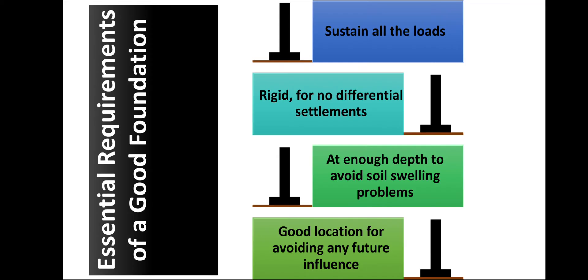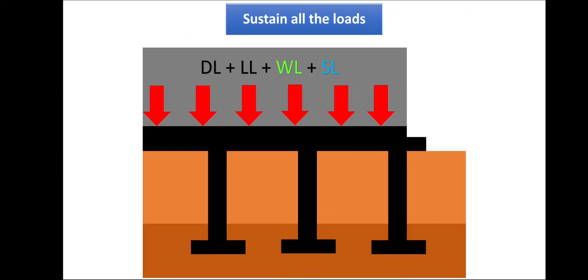Essential requirements of a good foundation: it should sustain all loads, be totally rigid (not elastic or plastic), be at sufficient depth to avoid erratic soil behavior, and have a good location. Regarding sustaining all loads — dead load and live load are always present, while wind load and snow load depend on locality and structure type (e.g., skyscrapers experience high wind loads; snowy regions require snow load consideration). The foundation must sustain all possible loads that will come on the structure.